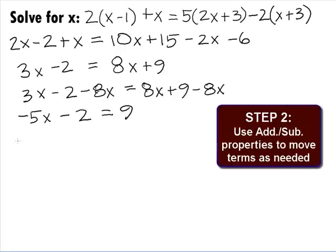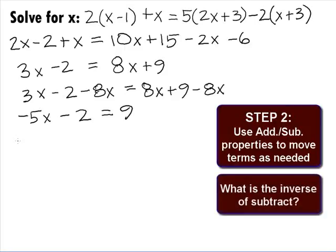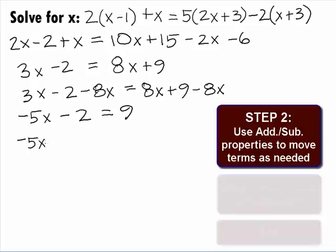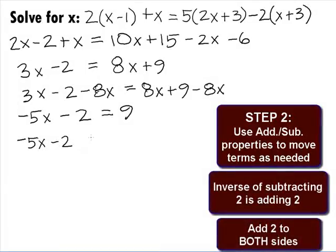Let's move that constant term of negative 2 to the other side. What is the inverse of subtract? Add. So, we need to add 2 to both sides. So, we end up with negative 5x minus 2 plus 2 on the left side equals 9 plus 2 on the right side. So, we end up with negative 5x equals 11.